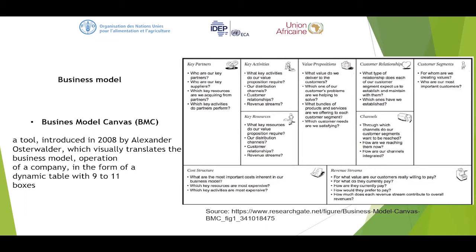Then key resources: what key resources does our value proposition require? For distribution channels: through which channels do our customer segments want to be reached? You have to create different channels for different customers — you cannot use a one-size-fits-all approach. How are we reaching them — is it radio, mobile phone, public dialogue, broadcast? And how are our channels integrated — do they work in isolation or as one unit? Then of course costs: what are the most important costs inherent in our business model? Which resources and which key activities are most expensive? This helps with your planning.